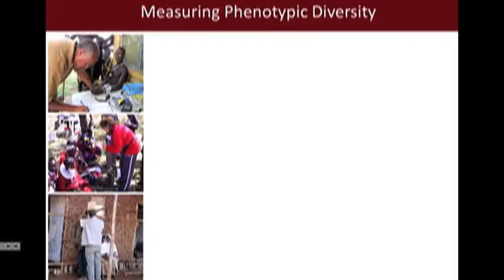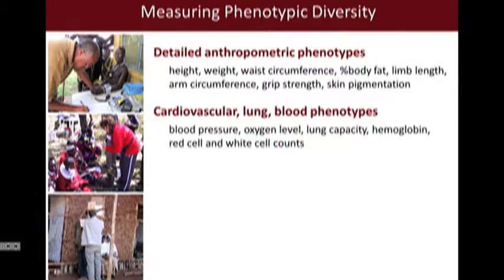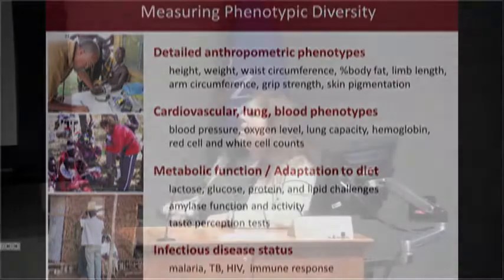We look at phenotypic diversity, including very detailed anthropometric measurements—height, weight, percent body fat—as well as cardiovascular, lung, and blood phenotypes, metabolic function, and infectious disease status. One of the key challenges is how to distinguish genetic from environmental factors that are influencing variable traits, including disease risk.